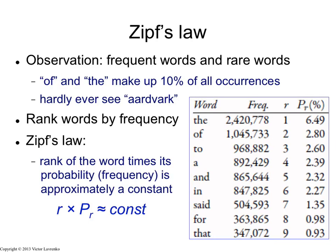So we'll start with Zipf's law. Zipf's law is basically a law that tells you how many frequent words and rare words you're going to have in a collection of text. Suppose you do the following experiment: you take a large collection of text, break it up into individual words, lowercase them, and count the frequency of each word in that collection. Then you sort the words and rank them in the order of decreasing frequency.